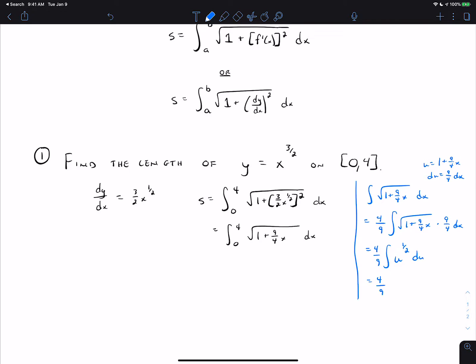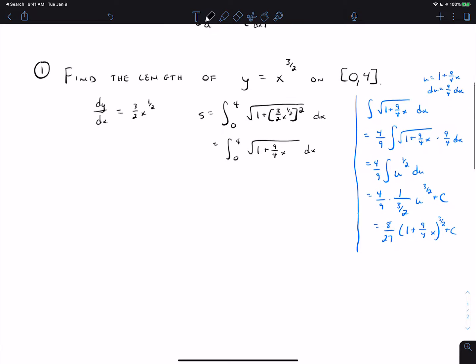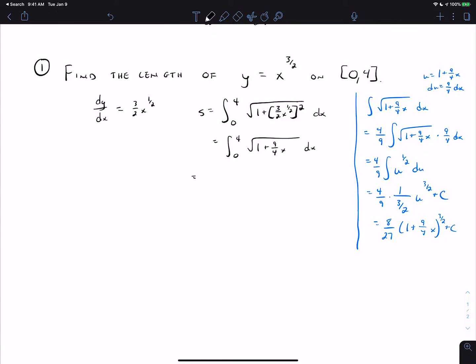We add 1 to the power. We get 1 over 3 halves u to the 3 halves plus c. The fundamental theorem of calculus says we can pick any anti-derivative. We'll choose the one where c is 0 and evaluate from 0 to 4.